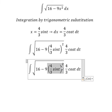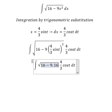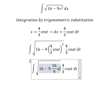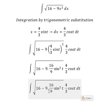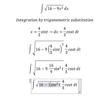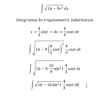So this one we have 16 over 9 sine t square. Number 9 and number 9 we cancel. 16 and 16 we can do factorization.